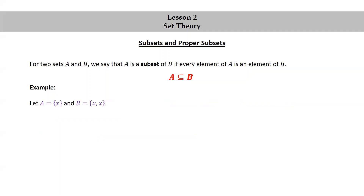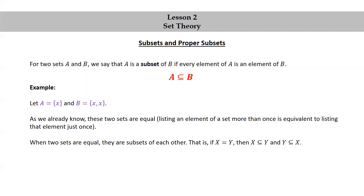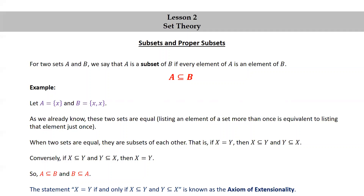Another example. Let A be the set consisting of x, and B the set consisting of {x, x}. As we already know, these two sets are equal. Listing an element of a set more than once is equivalent to listing that element just once. When two sets are equal, they are subsets of each other. That is, if X equals Y, then X is a subset of Y and Y is a subset of X. Conversely, if X is a subset of Y and Y is a subset of X, then X is equal to Y. So in this case, we have A is a subset of B and B is a subset of A, because they're equal to each other. The statement X equals Y if and only if X is a subset of Y and Y is a subset of X has a special name — it's known as the axiom of extensionality.